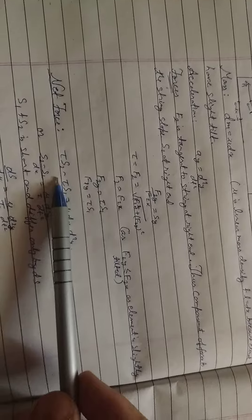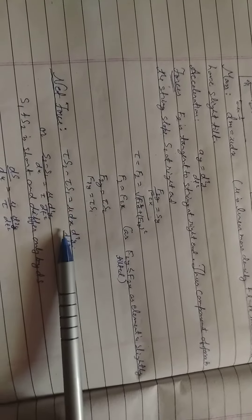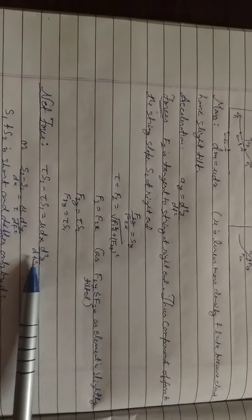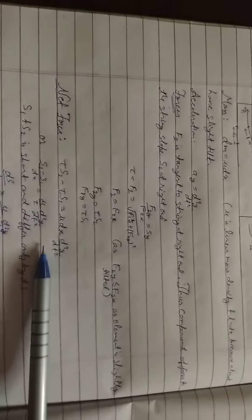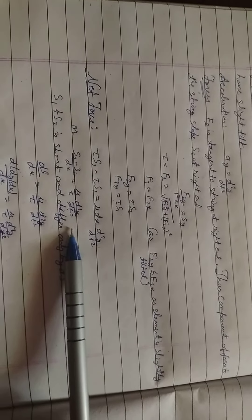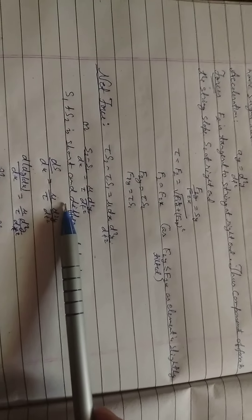Net force: tau s2 minus tau s1 is equal to mu dx d square y by dt square. Or, s2 minus s1 by dx is equal to mu by tau d square y by dt square.